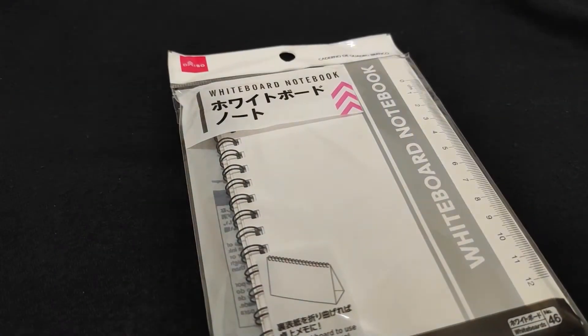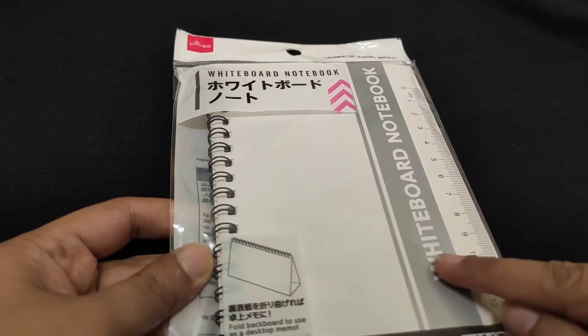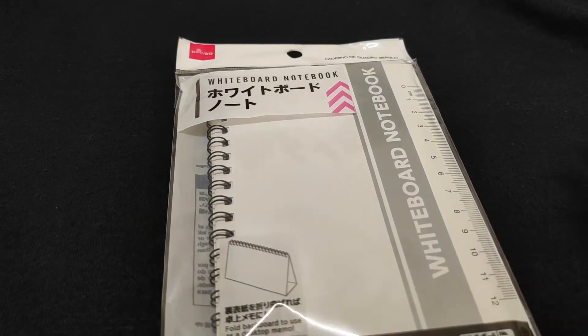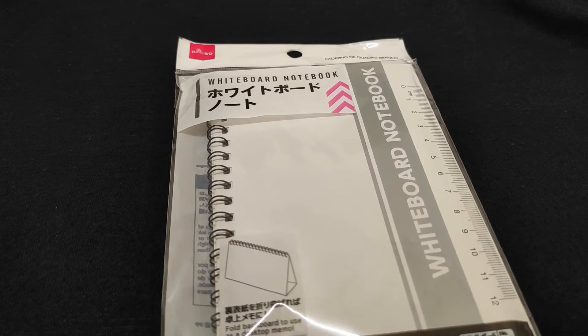So first up is the whiteboard notebook. I bought this thing from Living Plaza. It's like a dollar store for Hong Kong. So if there is no price written on an item, the price is $12.